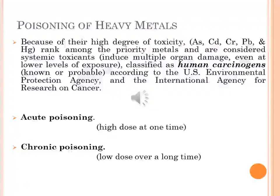Their multiple industrial, domestic, agricultural, medical and technological applications have led to worldwide distribution in the environment, raising concerns over effects on human health. Toxicity depends on several factors including dose, route of exposure, chemical species, as well as the age, gender, genetics and nutritional status of exposed individuals. Because of their high degree of toxicity, arsenic, cadmium, chromium, lead and mercury rank among the priority metals of public health significance. These metallic elements are considered systemic toxicants known to induce multiple organ damage even at low levels of exposure. They are classified as known or probable human carcinogens according to the US Environmental Protection Agency and the International Agency for Research on Cancer.